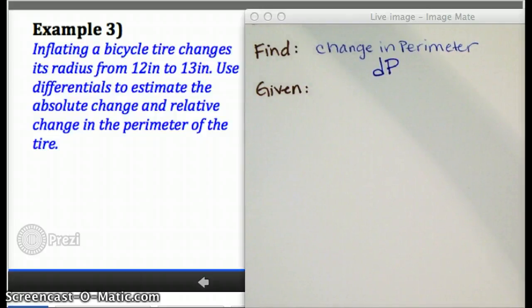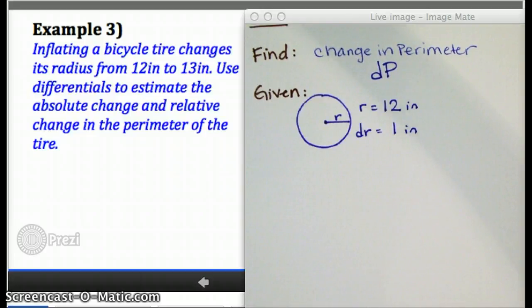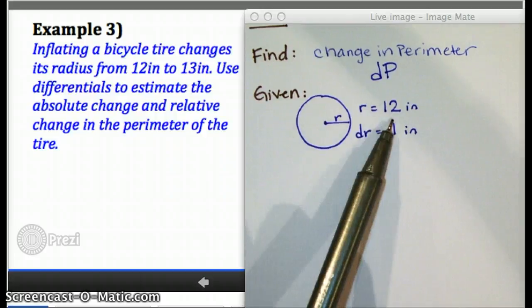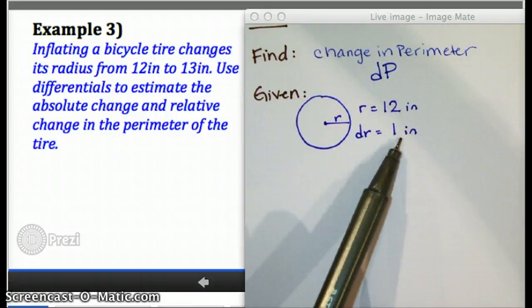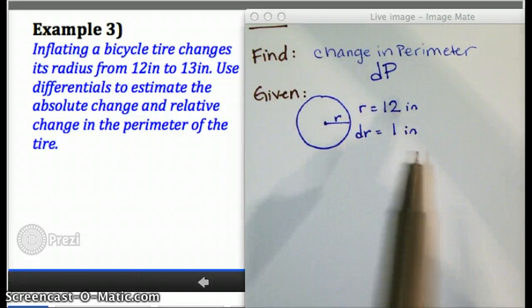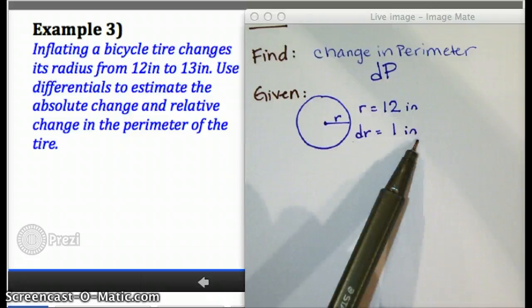How about the given information? What all do we know here? Right, we know that a bicycle tire is circular shaped, and we know that the radius started out as 12, and changed by one inch. Notice I'm not even really writing the 13 down,